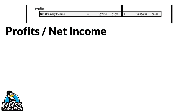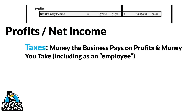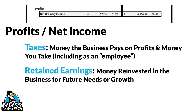Taxes are money the business pays on the profits of the business and any money that you take out of the business. Most of you are solopreneurs and you're going to take money out of the business, so you're going to owe taxes. You need to make sure that you set aside enough taxes out of those profits. Next, you're going to have to have some retained earnings — this is money that you take out of those profits and retain in the business to invest for future growth. Like maybe you need to buy some more inventory, build up three to six months of emergency fund, or buy special equipment.